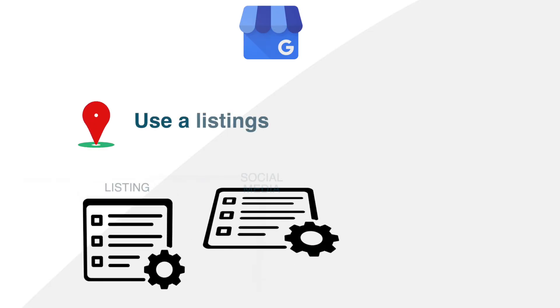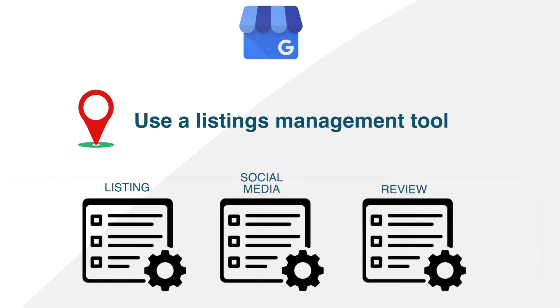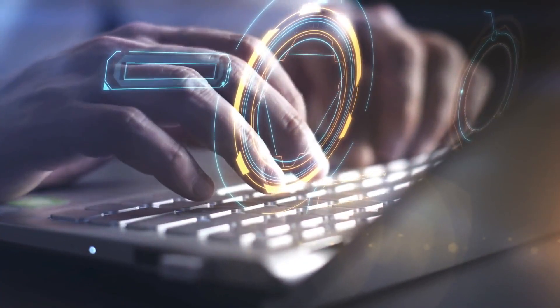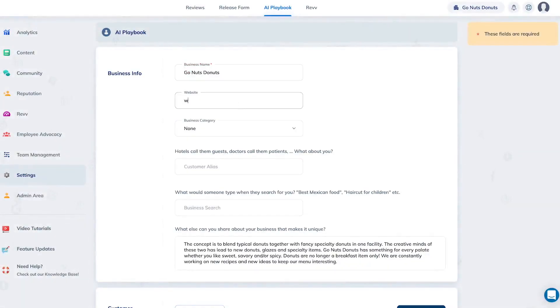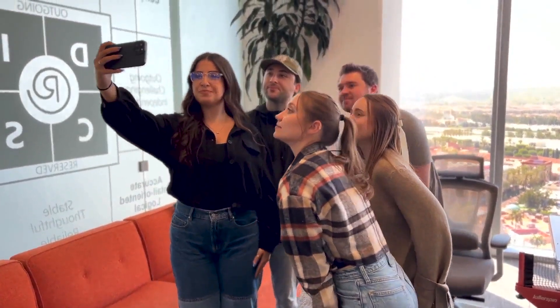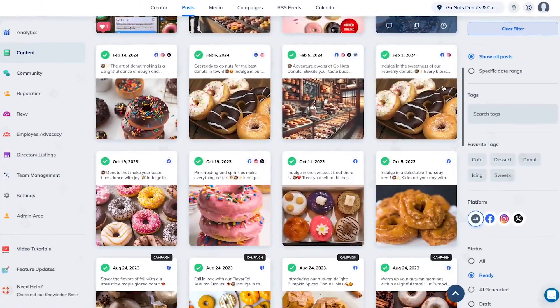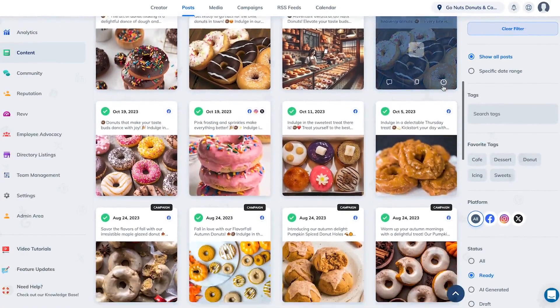Item number two: you're going to need a software and a centralized listing management, social media management, and review management tool. Now there are a lot of different versions for this. Ignite Visibility owns and recommends Raleo for this — it's a tool that can handle all this for you: local listings, social media management, review generation, and monitoring responses.